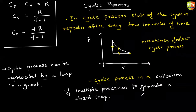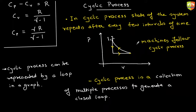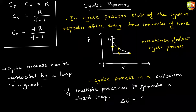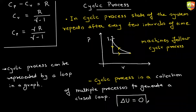Now, in a cyclic process, if you start from a point and end at the same point, what will be the change in internal energy for the entire cyclic process? It is zero — because ΔT is zero. You started from the same temperature and ended at the same temperature, so ΔU for the entire cyclic process is zero.